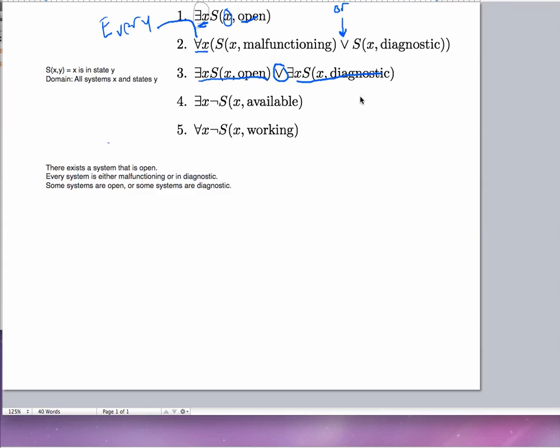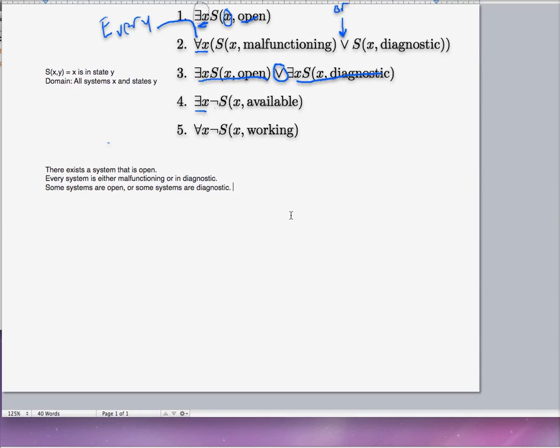The fourth one here would say there exists an x such that not S(x, available). Now it's kind of an awkward way to say it, so one way we could rephrase that is to say that there exists a system. Instead of saying not is available, we could just say that is unavailable. There exists a system that is unavailable. That's what not x available means.